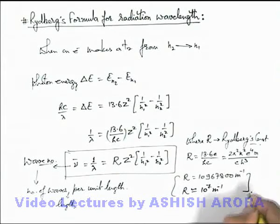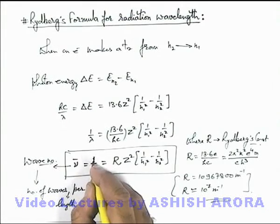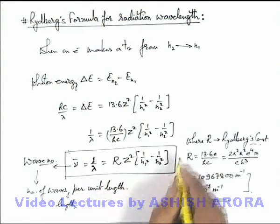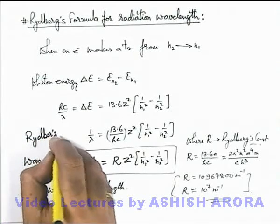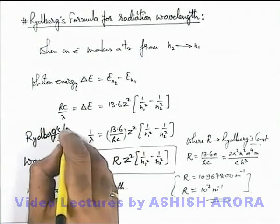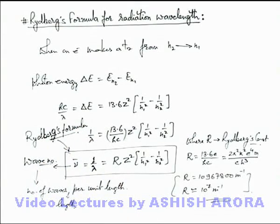So you must be careful, whenever you are required to directly calculate the expression for wavelength of emitted radiation, this formula can be used, which is called Rydberg's formula for calculation of emitted radiation from a hydrogenic atom.